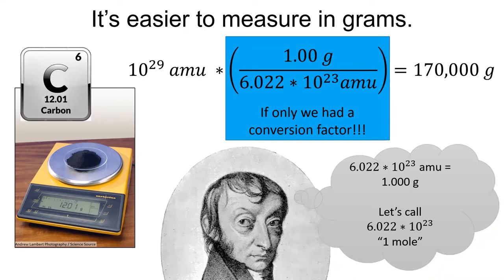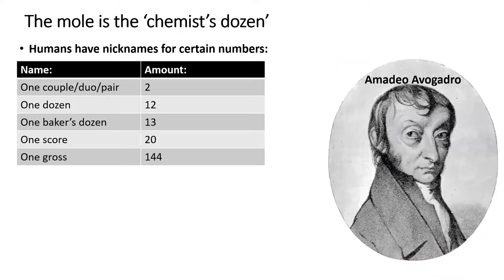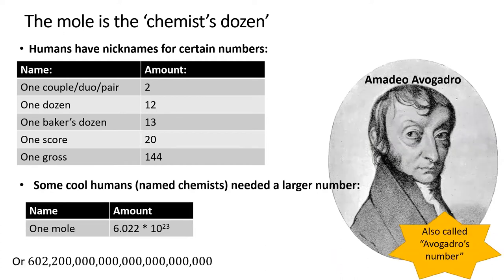The number 6.022 times 10 to the 23rd is just that conversion factor. It's the number of atomic mass units in one gram. This number has the nickname one mole. The word mole is just human shorthand for a specific number. In the same way that the word dozen symbolizes 12, the word mole symbolizes 6.022 times 10 to the 23rd. The mole is also called Avogadro's number after this handsome fellow.